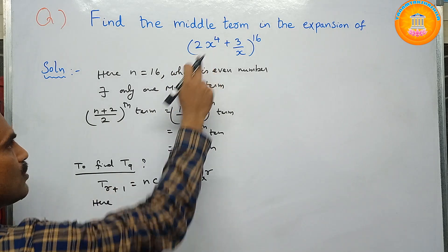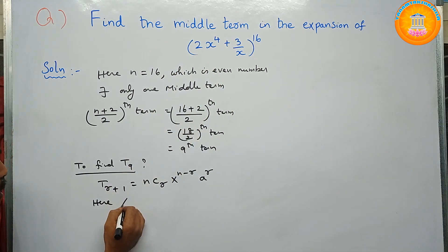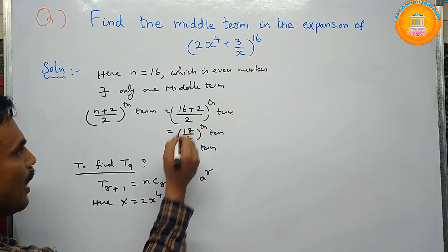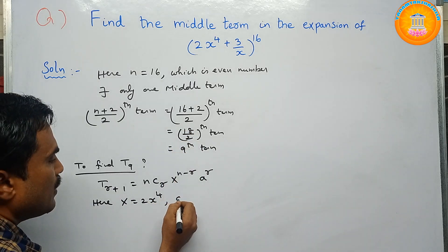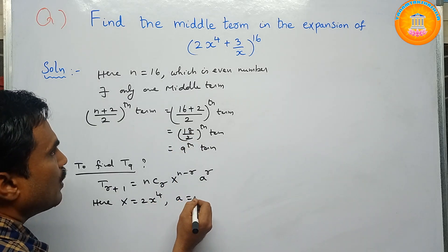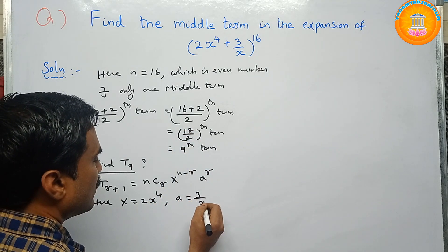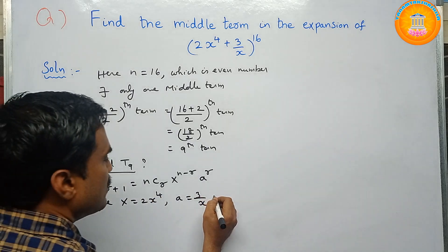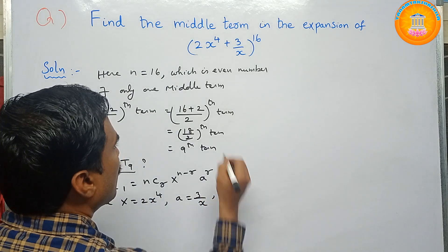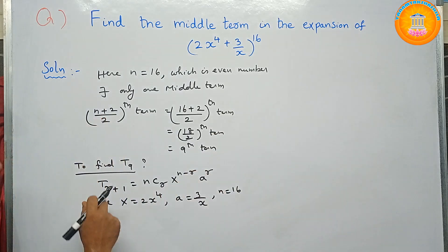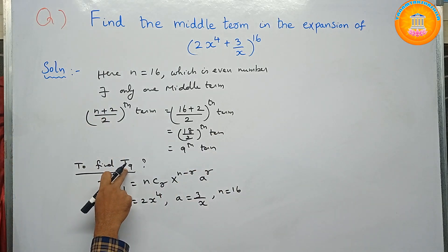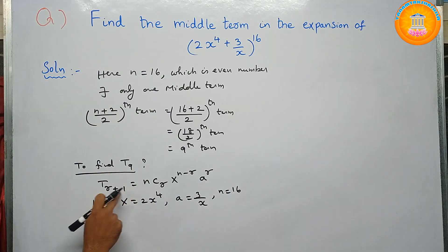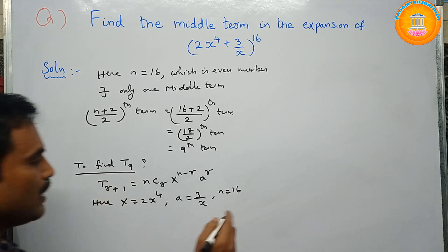From the given problem, in place of x we have 2x^4, and in place of a we have 3/x. The value of n is 16. Since we need T9, we set r + 1 = 9, so r = 8.